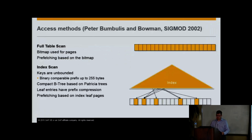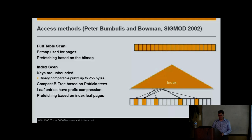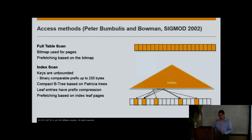Moving on to access methods. Full table scan uses our bitmap to prefetch pages since we have a list of all of them. We also have B-tree indexes. Something different: we don't have any bounds on the length of our keys in our B-trees — keys don't have to fit into a page, you could have keys that are multiple 2-gigabyte strings. Keys are binary comparable. We make a hash of 255 bytes of the prefix because almost all customers have keys that fit that size, then use a compact B-tree based on a Patricia tree internally within each node, letting you traverse the tree without comparing the entire key.